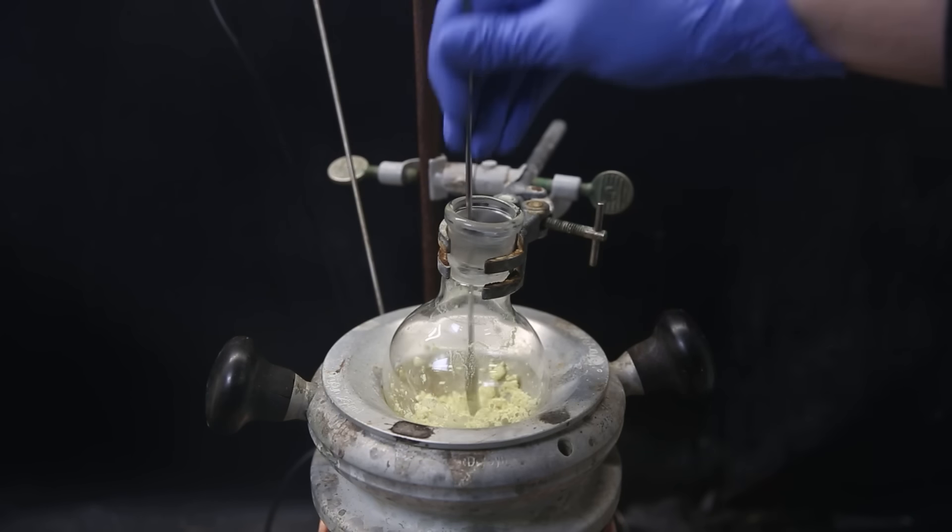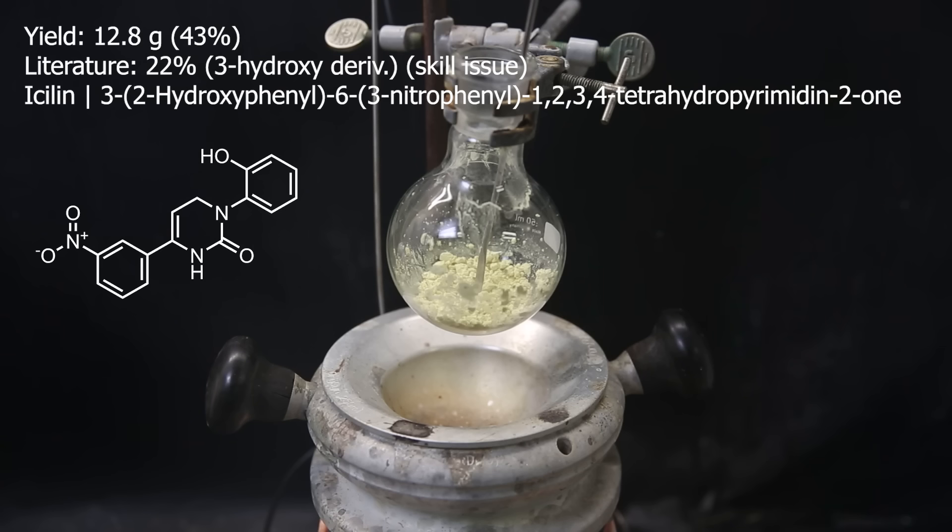In the end, I am left with icilin as a dry yellow powder, and the yield turned out to be 12.8 grams, which is 43%. This is more than the literature, but they made a derivative, so that sounds like a personal problem. So now it is time to taste, I mean analyze it biologically.